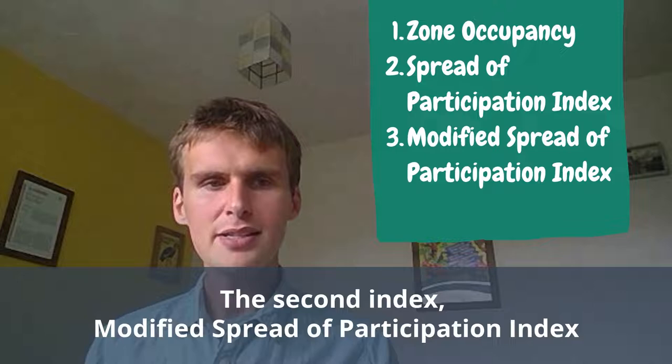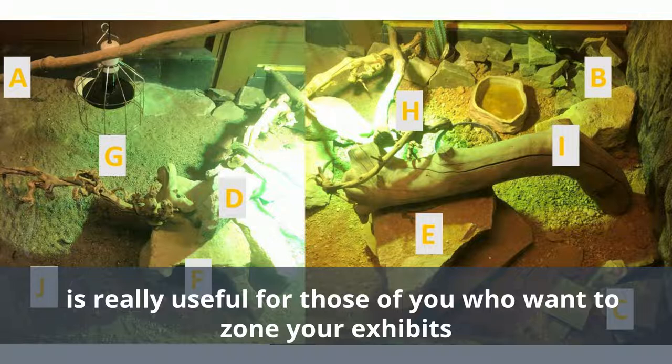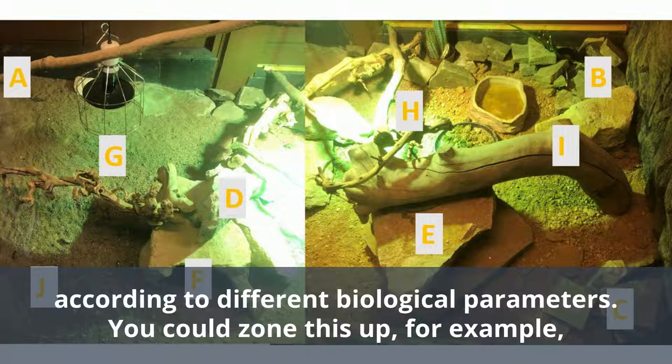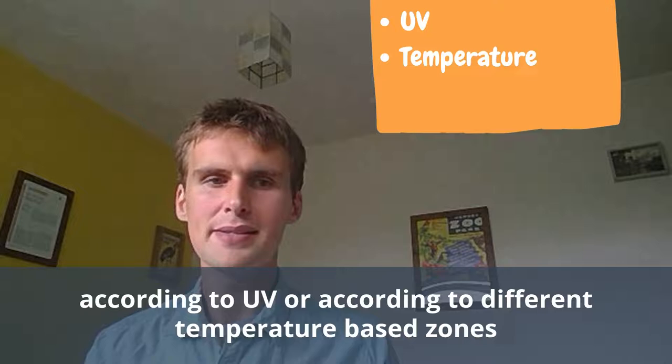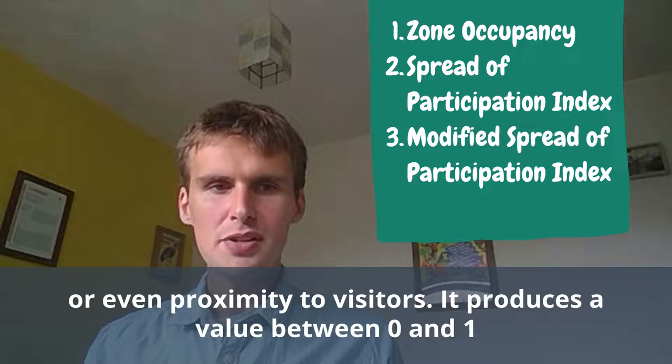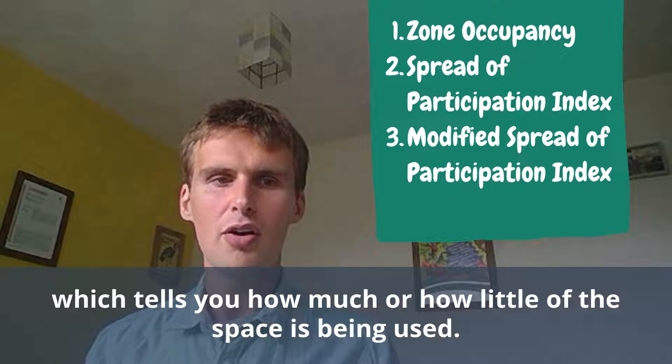The modified spread of participation index is really useful for those who want to zone their exhibits according to different biological parameters — for example, according to UV, different temperature-based zones, or even proximity to visitors. It produces a value between zero and one, which tells you how much or how little of the space is being used.